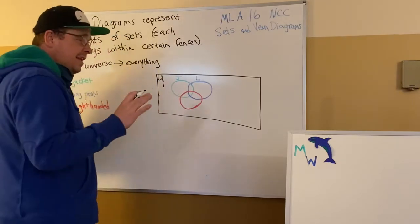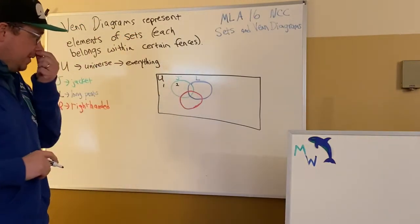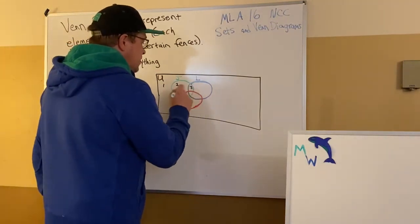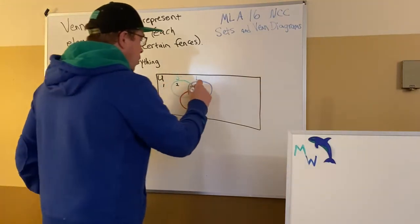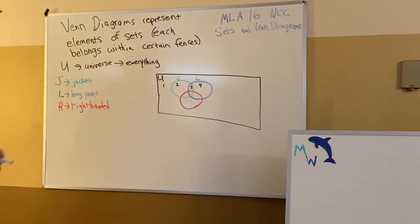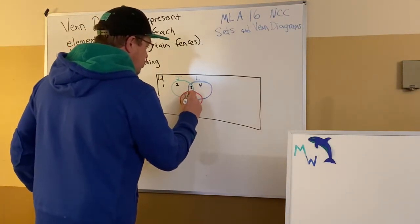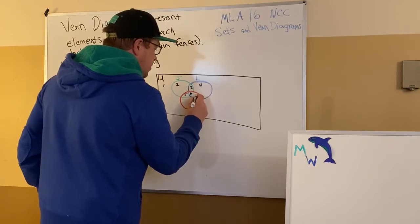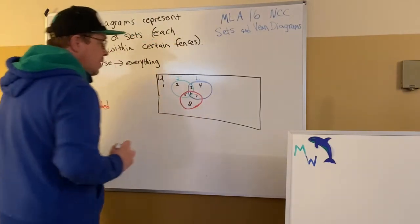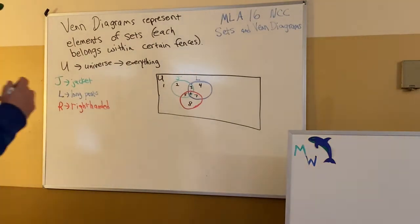Number one is out here in the universe and is not in any circle. Number two is only green, only in the green circle. Number three is in green and blue. Number four is only in blue. Number five is red and green. Number six has red, green, and blue. It's in all three circles. Number seven is inside the red circle and inside the blue circle. And number eight, right there. Those are the eight regions that we can have here. If you remember, we had in the truth tables, we had eight whenever we had three things that could be true or false.